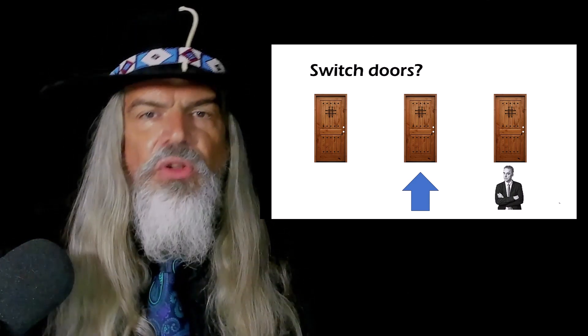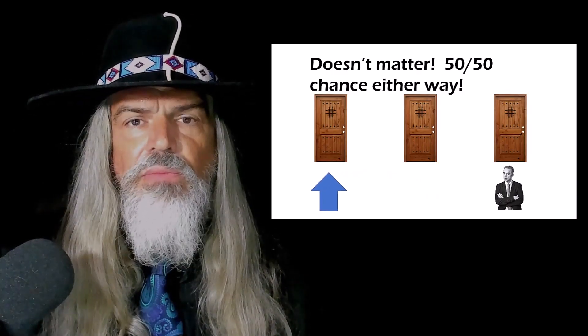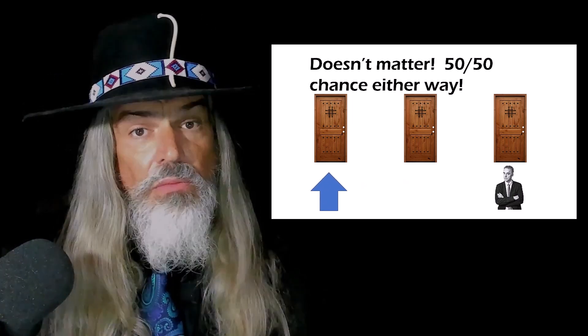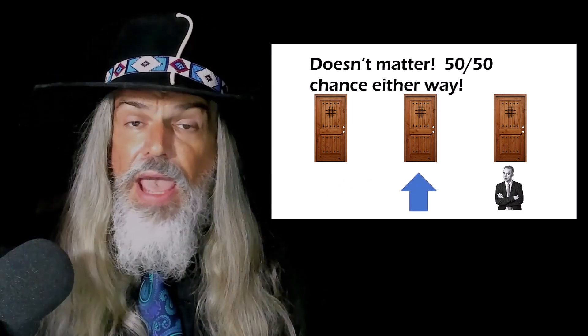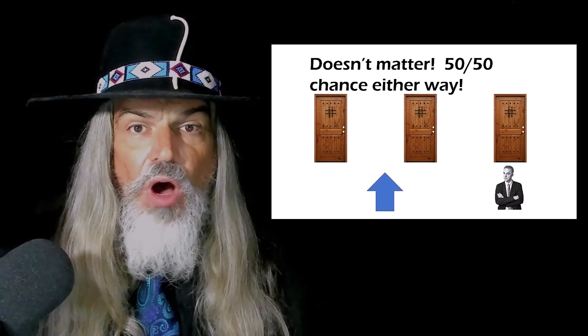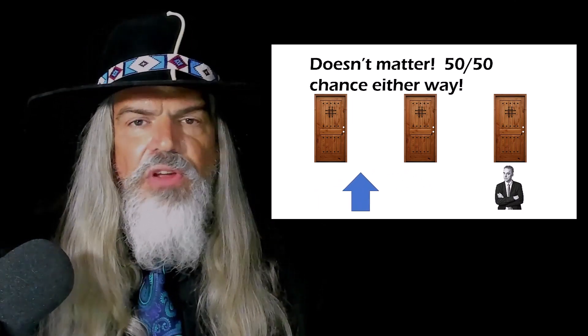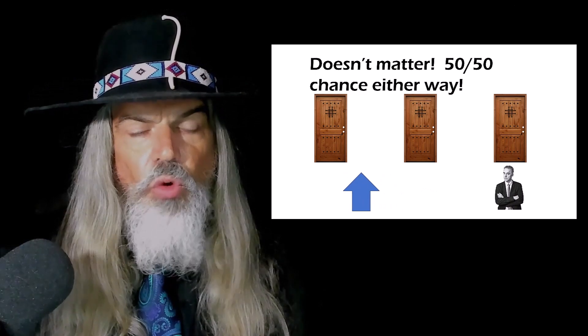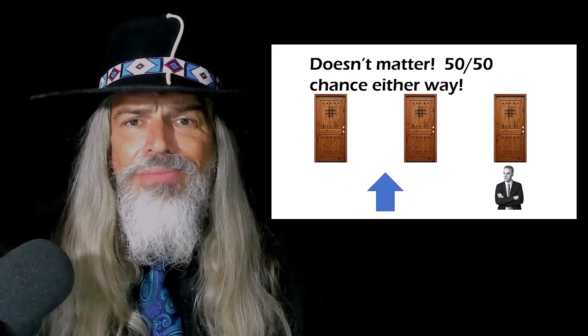Well, this seems simple, doesn't it? If you switch or keep the original door, you have a 50-50 chance of winning, right? Doesn't matter, right? We've got two doors. A zonk could be behind either one, the car could be behind either one, and there's a 50-50 chance either door could have the car or the zonk. So, it doesn't matter, right?